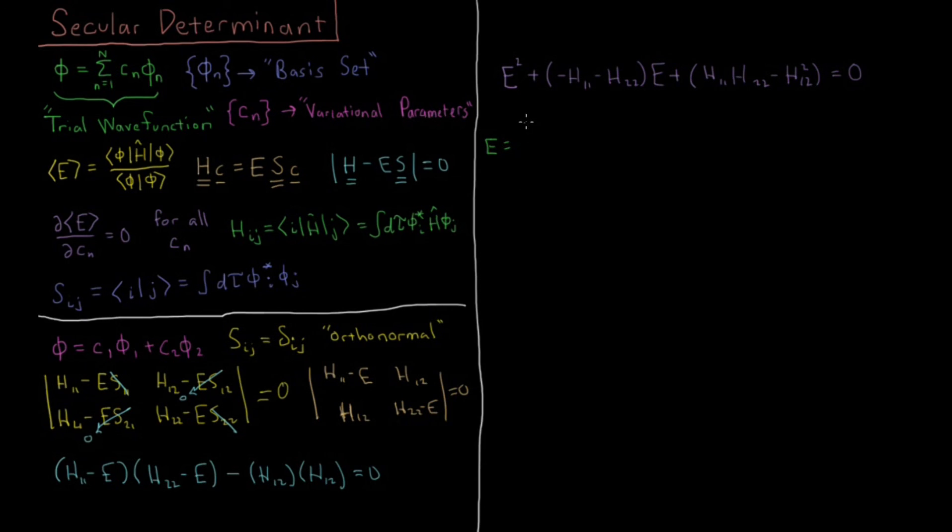So this energy is going to give us -b for the first part of the quadratic equation, plus or minus, then you have √(b² - 4ac), so that gives us (H11 + H22) – b² and -b² are the same, so I'm just putting in -b here and squaring it. Easier to work with.